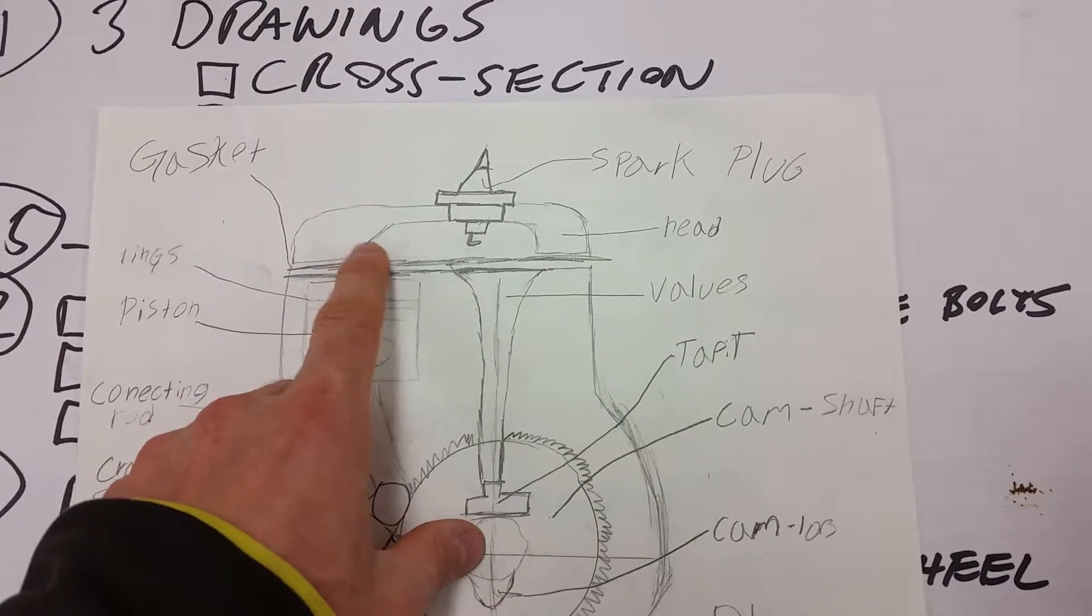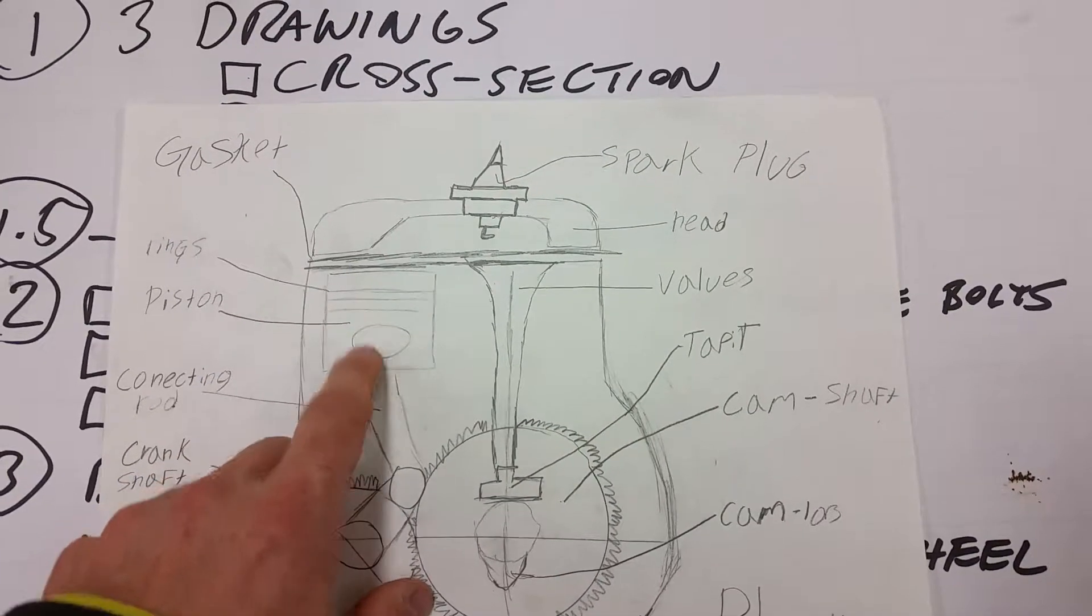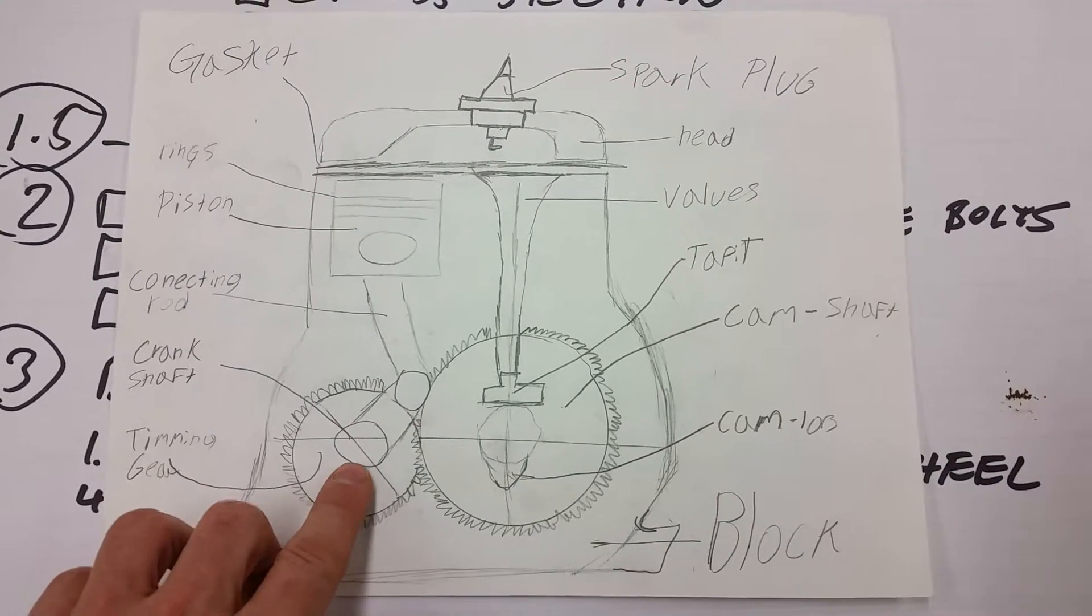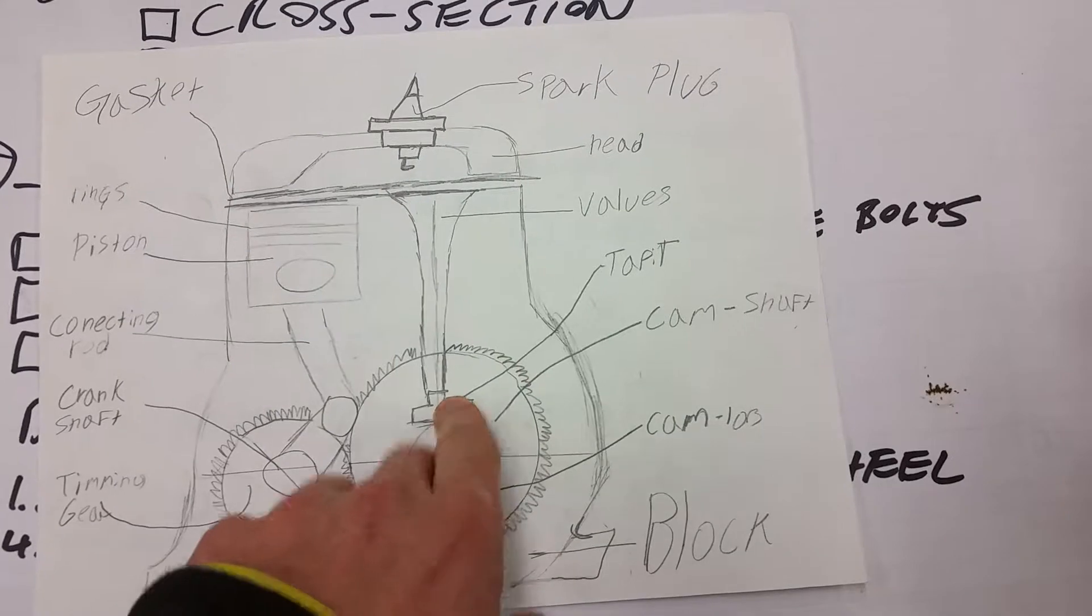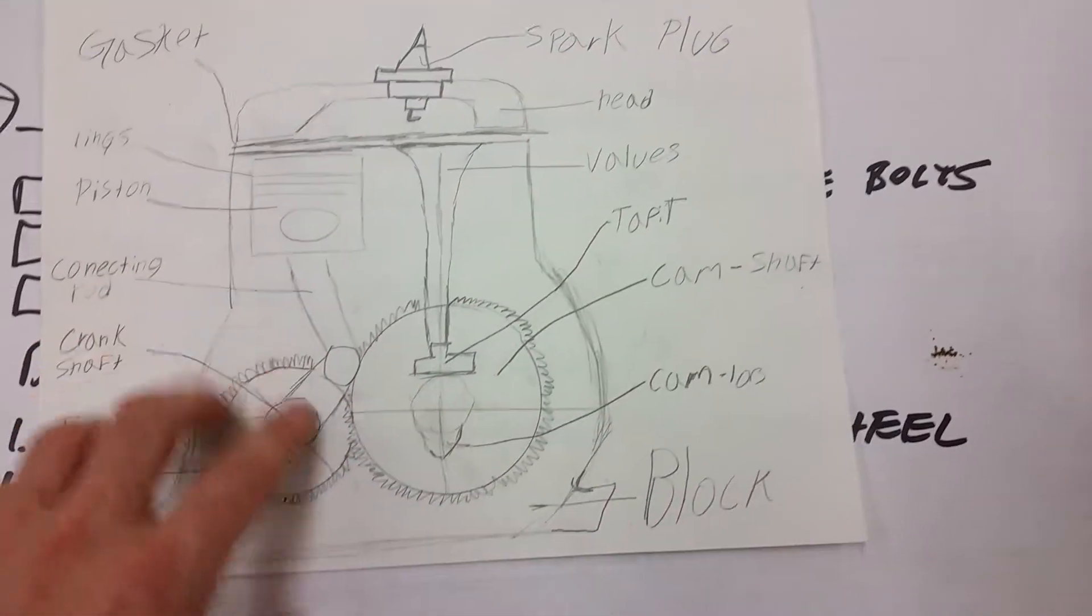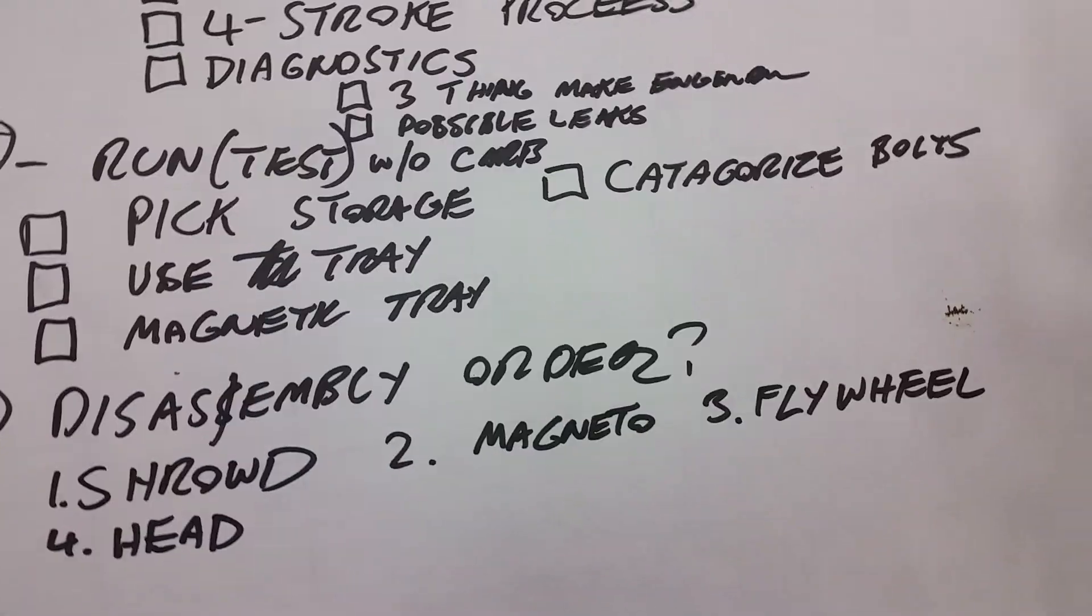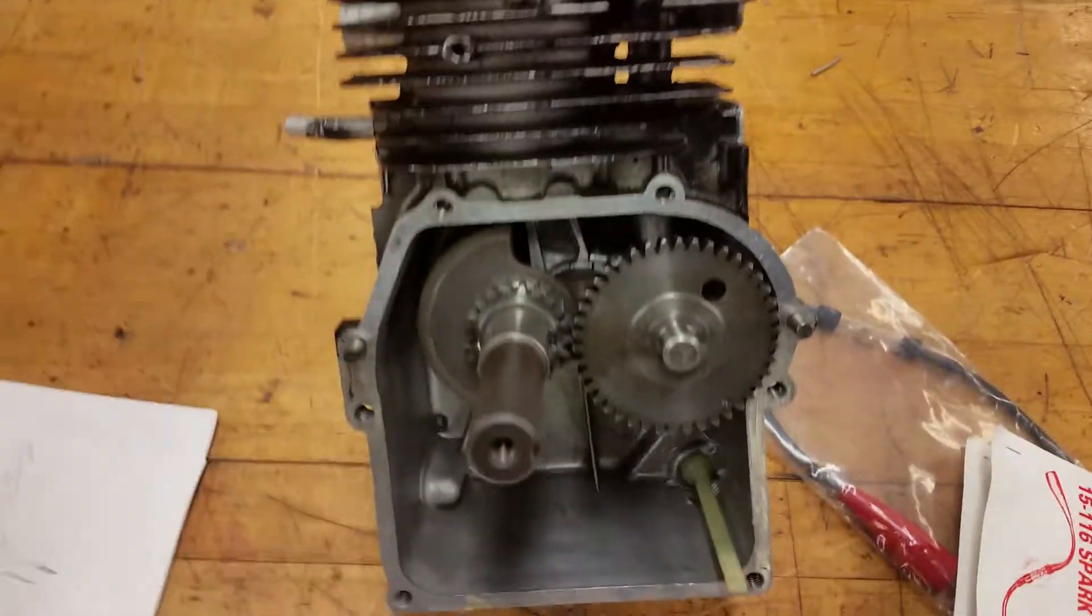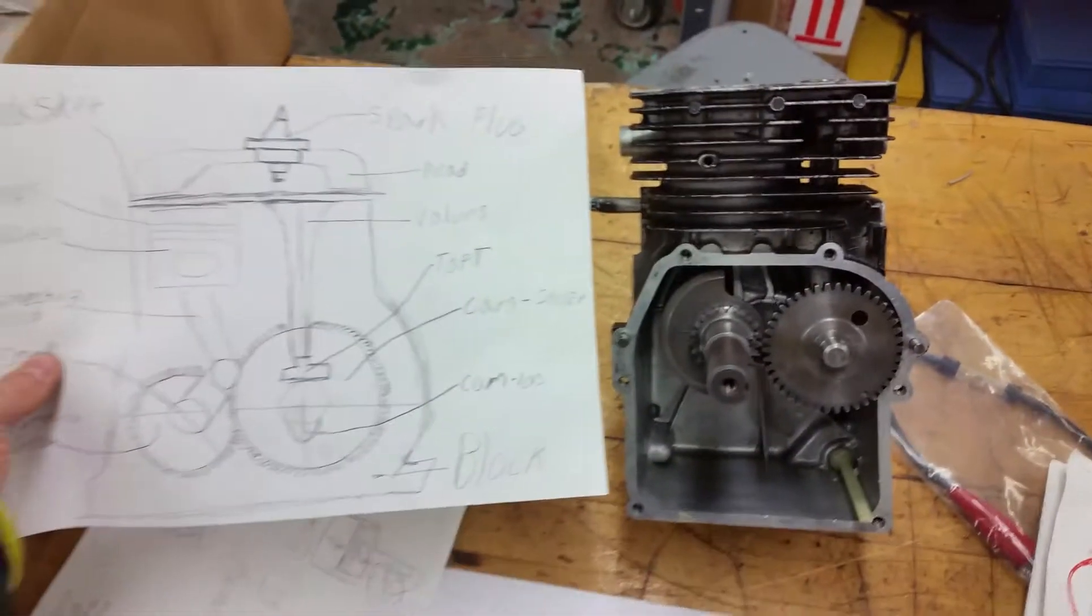...the head, there's the gasket, here's labeled as the head, the rings on the piston, the connecting rod, the crankshaft, the timing gear, the cam lobe, the camshaft, the tappets, and this is the block. And you can see that displayed right here, so basically this drawing is this but in a cross section.